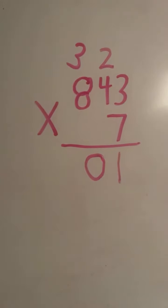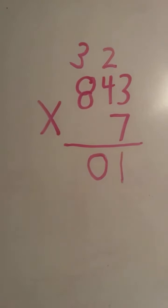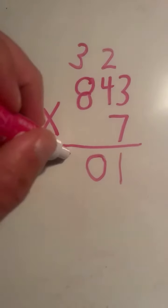The 3 in 30 gets carried over to the hundreds place. 8 times 7 equals 56, plus 3 equals 59.